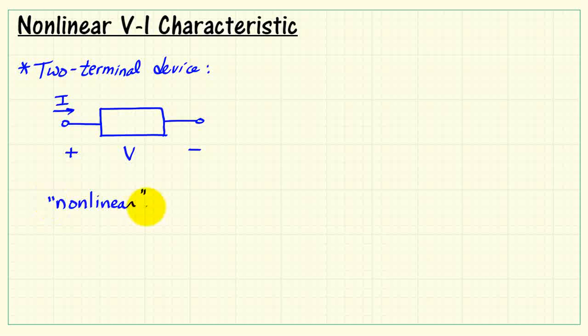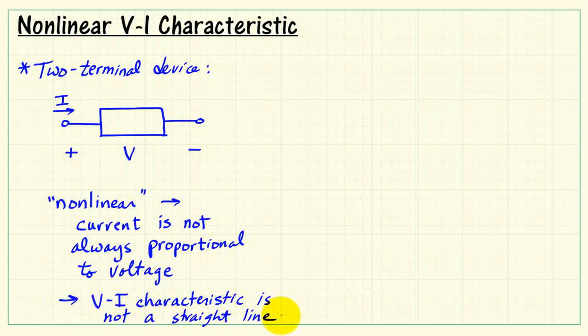Now we're specifically looking at the notion of non-linear devices, and what does that signify? Well, we would realize that the current is not always proportional to voltage. And also we could think of it as, when you look at the V-I characteristic, it does not appear as a straight line.